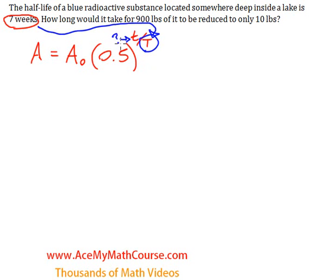The little t is our unknown variable that we want to solve for, and we're going to need to use logarithms to solve for it.